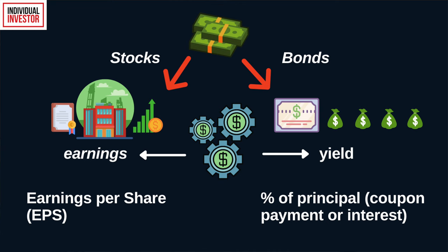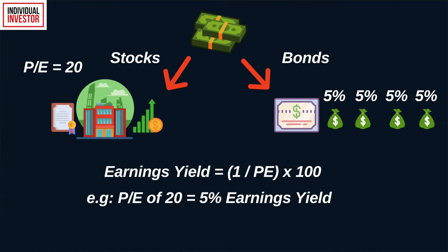As an investor, when you own shares of a company, you will also own a piece of the earnings, which are the earnings per share or EPS. And as a bond holder, you will get payments called coupons or interest as a percentage of the principal that you paid for the bond. You can think of the price to earnings ratio as the earnings yield on your initial investment when you buy shares. The earnings yield formula is: 1 divided by the PE ratio, multiplied by 100.